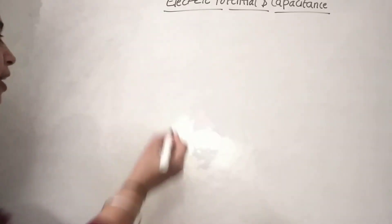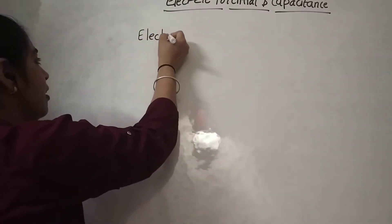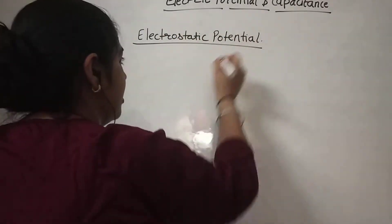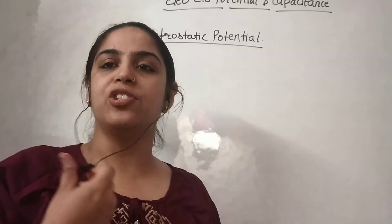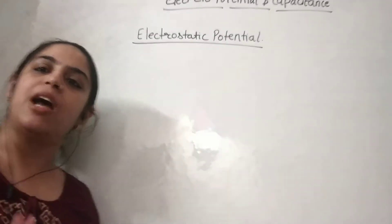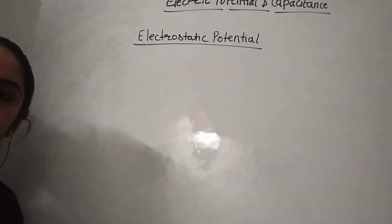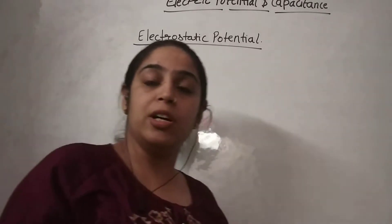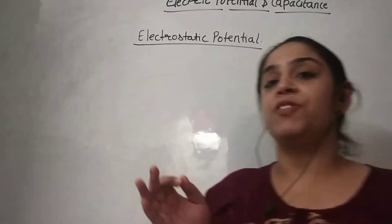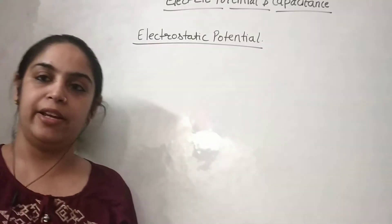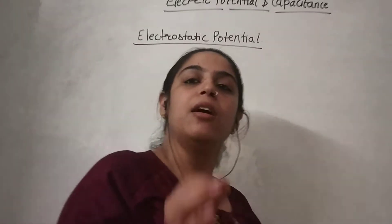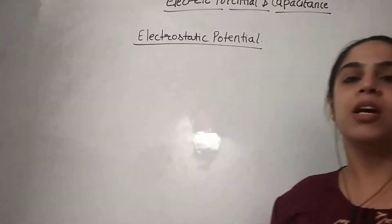Let's now talk about potential. Before I introduce the term electrostatic potential, I would like to ask — I have a potential term in gravitation, which is also called gravitational potential. Does anyone know the definition of gravitational potential? It is the amount of work done in taking a unit mass from infinity to that point without acceleration.